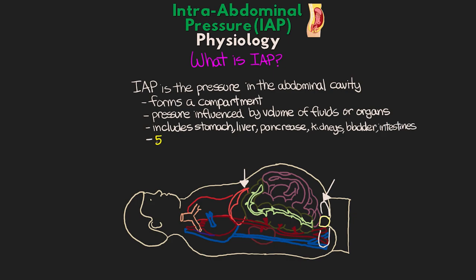There's typically 50 to 75 mLs of peritoneal fluid in this cavity, which is used to help lubricate the tissue. It also contains portions of the descending aorta, as well as the inferior vena cava, and both of their distal branches towards the legs. Because this is a closed compartment, elevations in pressure are transmitted throughout the compartment equally and can have effects on various organs and blood vessels within it.